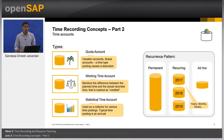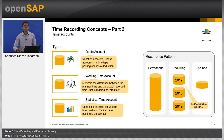There are three types of time accounts in the system. The first is the quota account, which is the type used for vacations. They usually have quantity deductions when time is posted to them. For example, a leave request would cause the deduction of a number of hours or days in the vacation time account.